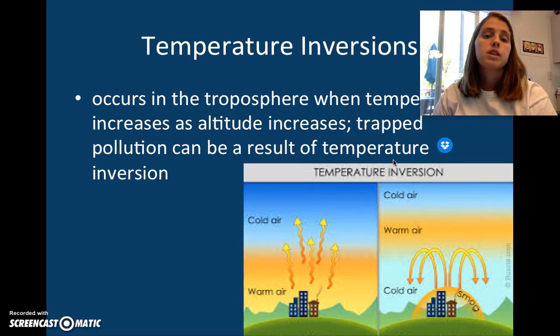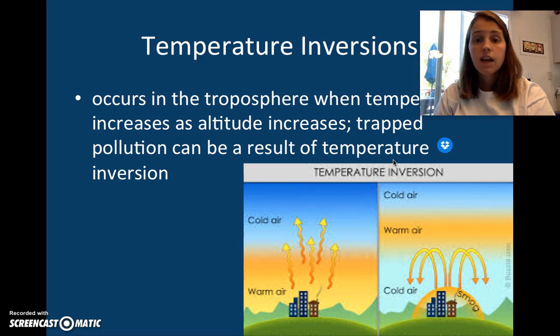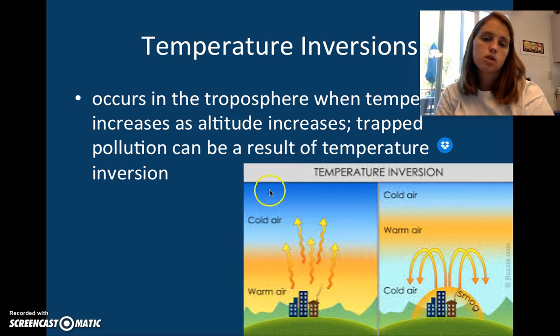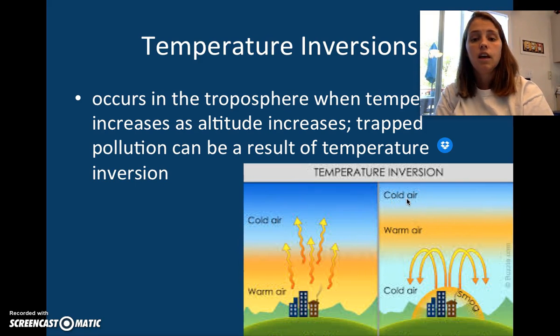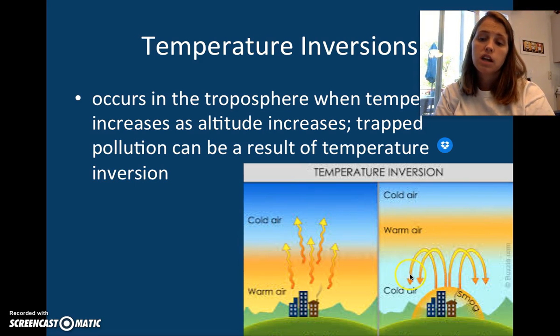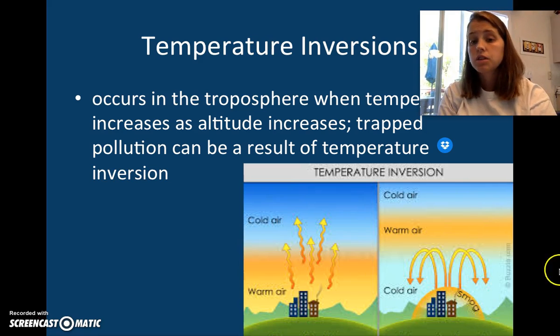Temperature inversion. This occurs in the troposphere when the temperature increases as altitude increases. Sometimes that happens and trapped pollution can be a result of this. Most of the time it gets cooler and it just gets released up into the atmosphere. But sometimes you get a blanket of warm air that cuts off part of the troposphere. When that happens, the smog or pollution is backed down—it's not released. And so you get smog that backs up around these cities. This would be your temperature inversion and this would be your normal conditions.